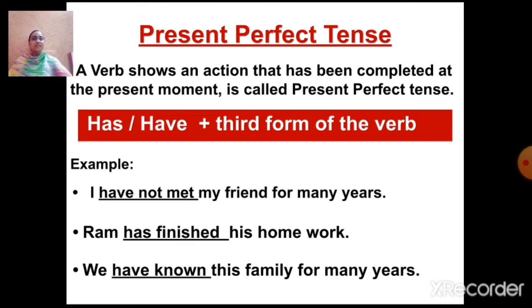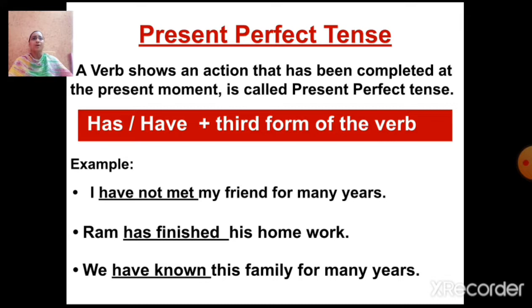Now let's quickly revise present perfect tense. A verb that shows an action that has been completed at the present moment is called present perfect tense. The formula is: has or have plus third form of verb. 'Has' we use with singular subject and 'have' we use with plural subject. For example: 'I have not met my friend for many years.' This means that in the past also I have not met my friend, and at present also I have not met my friend — so it is a continued action. Since 'I' is first person singular, we write 'have'.